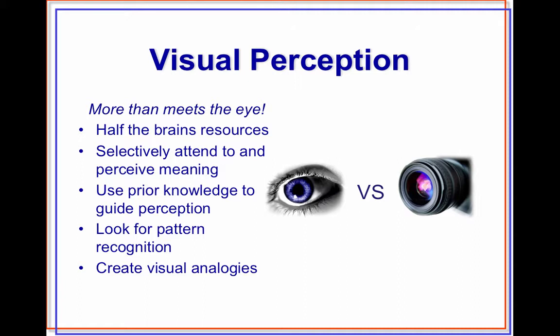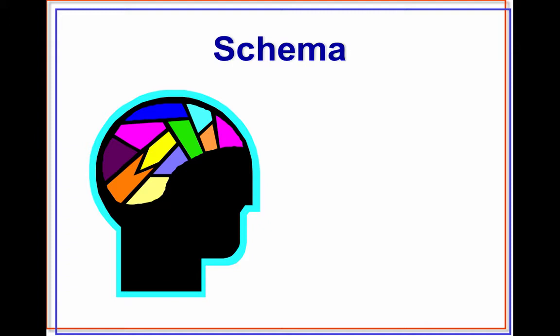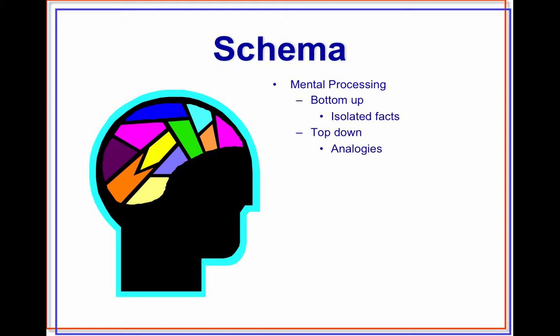Schema theory is one of the most interesting theories. It's the idea that there's some mental processing that is probably more metaphorical than it is physiological, and it represents an individual's entire organizational knowledge network. Based on the research he could find, Reber says schema theory deals with bottom-up or isolated facts, as well as top-down analogies.